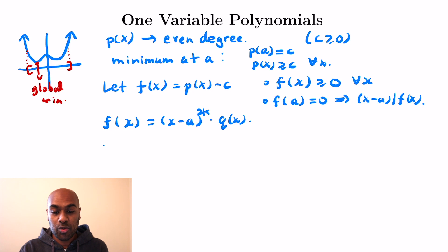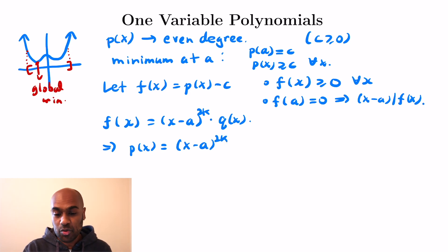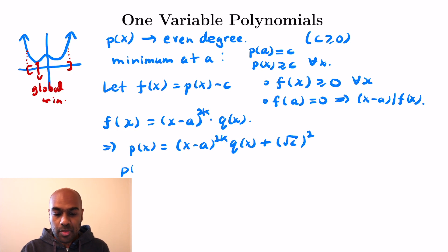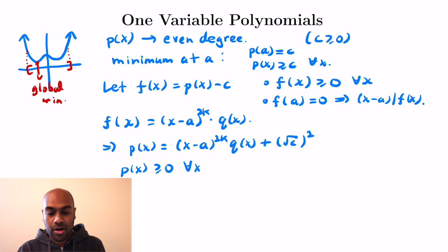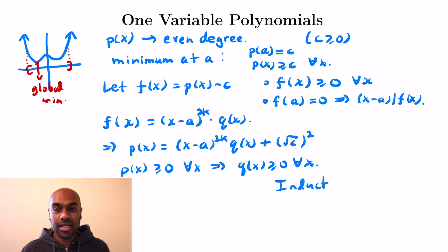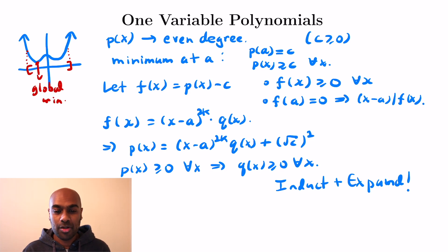So f of x is going to be x minus a to the 2k times the polynomial q of x. Rearranging, p of x is going to be x minus a to the 2k times q of x, plus the constant c — which I'll write as the square root of c, all squared, to emphasize that c is non-negative. We have p of x written as a square times q plus another square, so q is forced to be non-negative. We can apply the same process to q, which is a lower degree polynomial, keep doing that recursively, and then expand everything to get that p is a sum of squares of polynomials — so we're inducting and then expanding. This is the rough sketch of why one-variable polynomials that are non-negative are forced to be sums of squares.